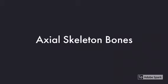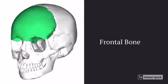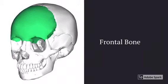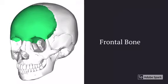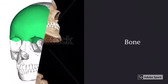This video is to explain the bones of the axial skeleton. Highlighted here is the frontal bone — this should be very easy for you to remember because it's the same place as the frontal region.